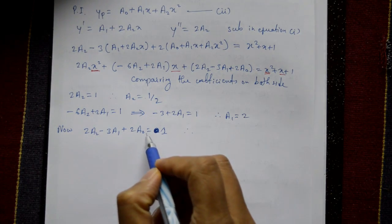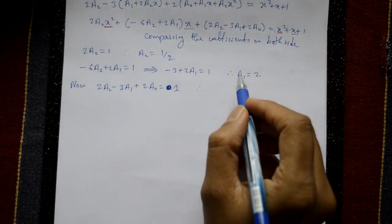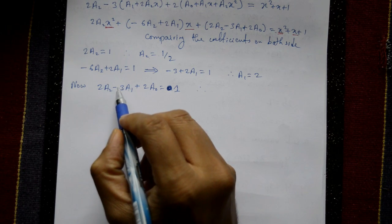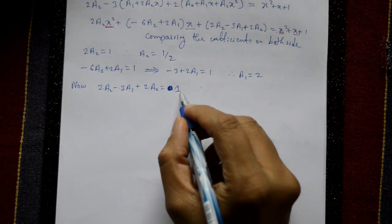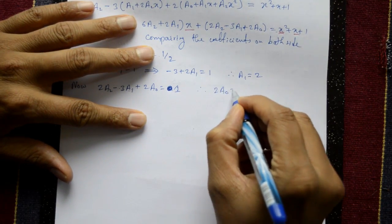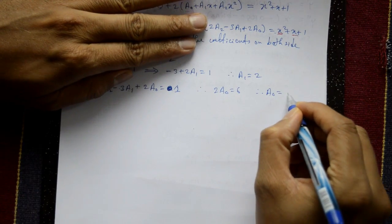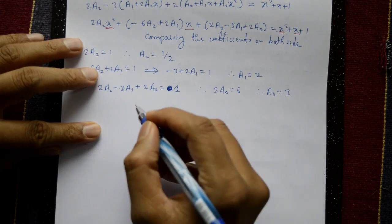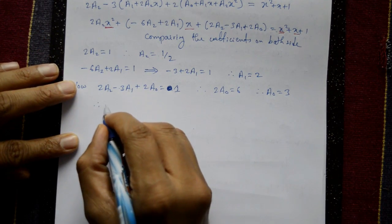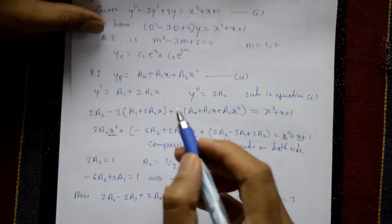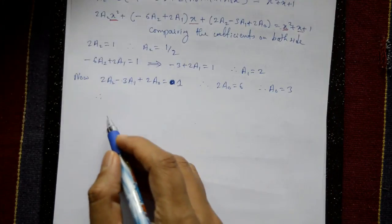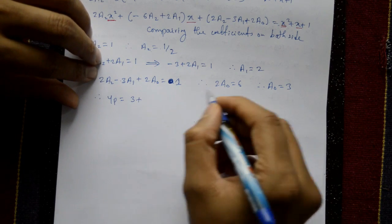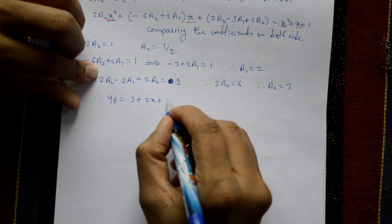Finally, comparing constant coefficients: 2a₂ - 3a₁ + 2a₀ = 1. Substituting a₂ = 1/2 and a₁ = 2: 1 - 6 + 2a₀ = 1, so 2a₀ = 6, therefore a₀ = 3. Substituting into equation number two, the particular integral is yp = 3 + 2x + (x²/2).